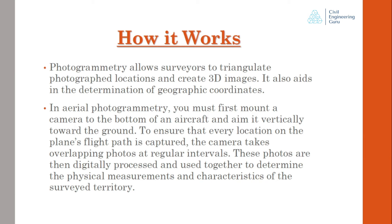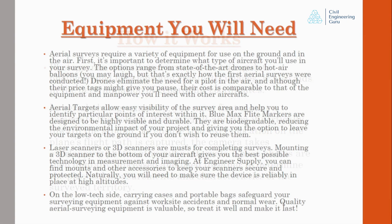Photogrammetry allows surveyors to triangulate photograph locations and create 3D images. It also aids in the determination of geographic coordinates. In aerial photogrammetry, you must first mount a camera to the bottom of an aircraft and aim it vertically toward the ground. To ensure that every location on the plane's flight path is captured, the camera takes overlapping photos at regular intervals. These photos are then digitally processed and used together to determine the physical measurements and characteristics of the surveyed territory.